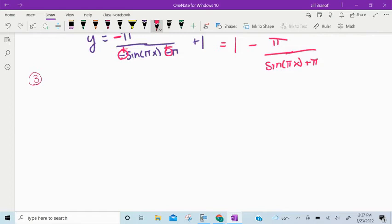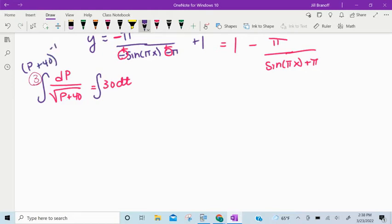So if I separate my variables, I get dp over the square root of p plus 40 equals 30 dt. And we can integrate both sides. So on the left side, consider that p plus 40 to the negative 1 half. So the antiderivative would be p plus 40 to the positive 1 half. So that's just the square root of p plus 40, divided by a half, so times 2. And on the right side, the antiderivative of 30 in terms of t is 30t plus c.